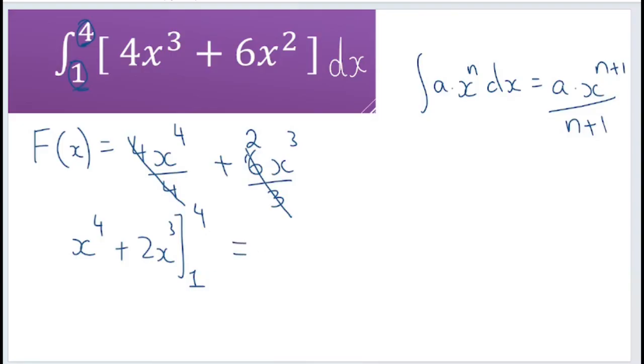So we're going to sub in 4 first into wherever we see the x. So that's going to be 4 to the power of 4 plus 2 times 4 to the power of 3, and remember to put a bracket around this before we minus our f of 1.